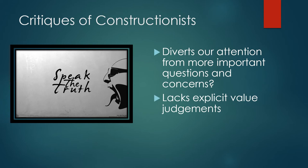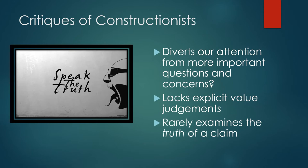There is also an argument that constructionists are not really paying attention to what is good and what is bad when looking at social problems claims. They look at claims and try to understand the point of view of the people making them without figuring out which are good claims and which are bad, which are good solutions and which are bad. Whether the claims are true or not is not the relevant question for constructionists — the relevant question is the point of view of those making the claims and how those claims affect the audience, without asking whether the claim is true.